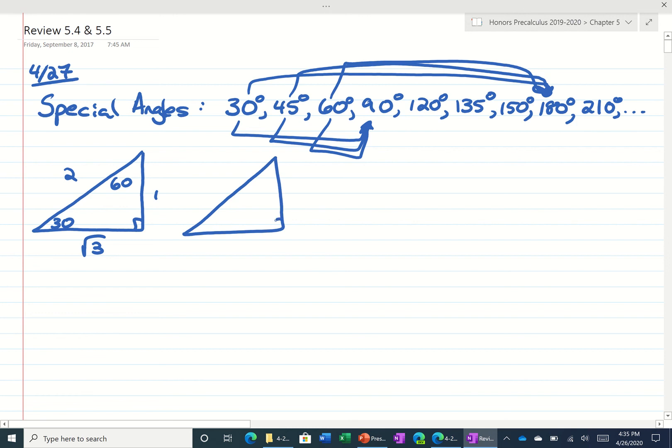The other triangle was 1, 1, and root 2. And then for our quadrantal angles.